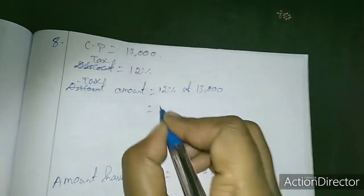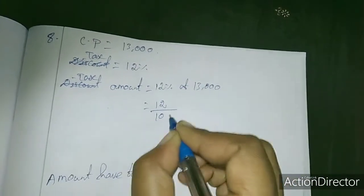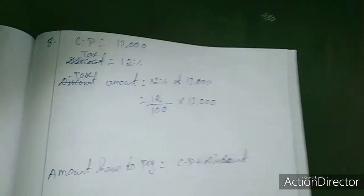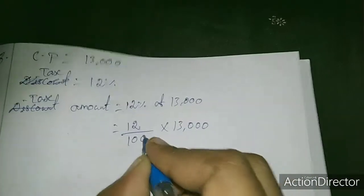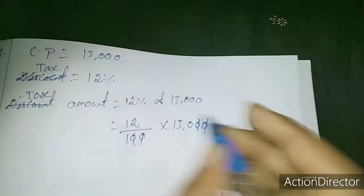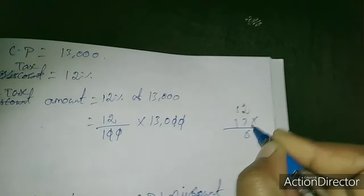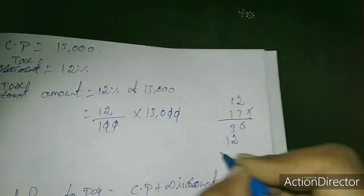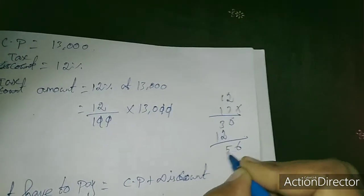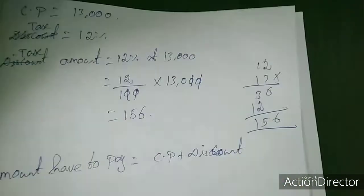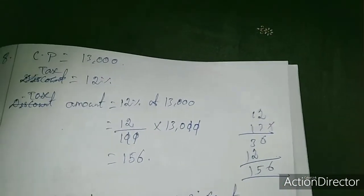12% of 13,000, so 12% we will write as 12 by 100 into 13,000. So this cancels and multiply 12 into 13. 6, 3, 2, 1, so we get 156. So tax amount is 1,560 rupees.